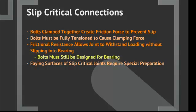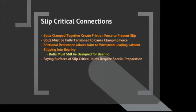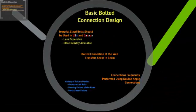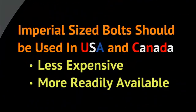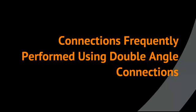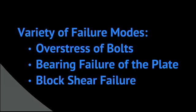The faying surfaces of slip critical joints require special preparation. For basic bolted connection design, imperial sized bolts should be used in the USA and Canada because they are less expensive and more readily available. The bolted connection of the web transfers shear in the beam. Connections are frequently performed using double angle connections. Failure modes include over-stress of bolts, bearing failure of the plate, and block shear failure.